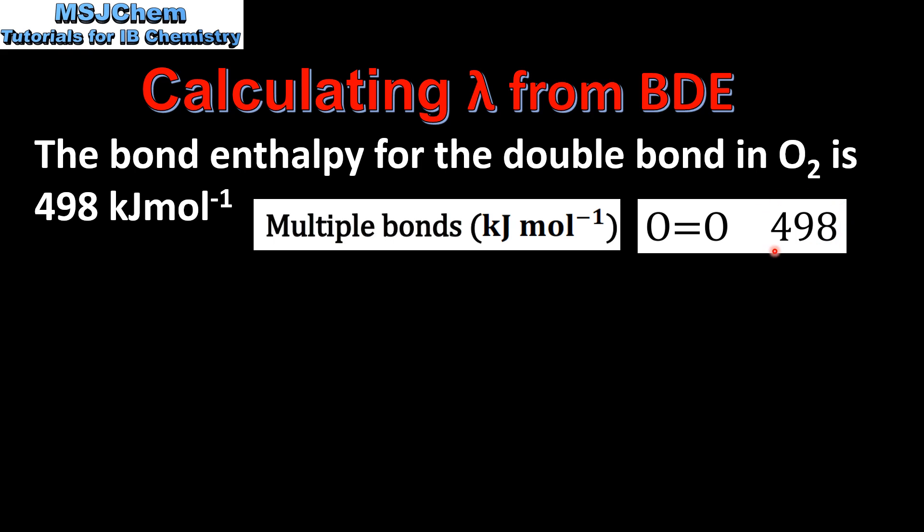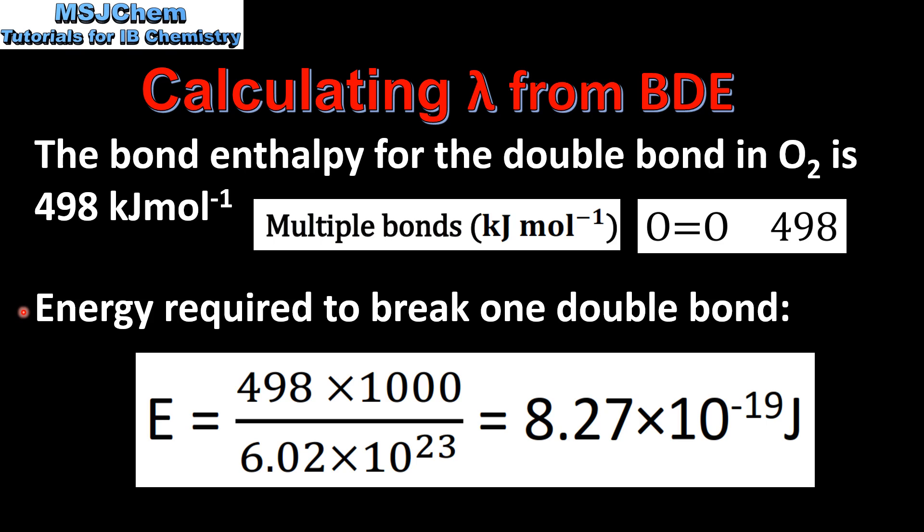This is the energy required to break one mole of double bonds. To calculate the energy required to break one double bond we use this equation here. The energy required to break one double bond is equal to the bond dissociation enthalpy multiplied by a thousand to convert from kilojoules to joules.